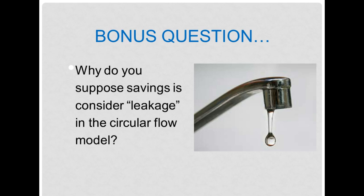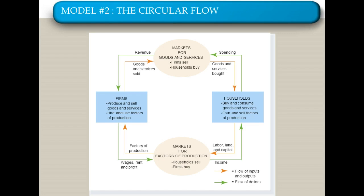One last question: why is savings considered leakage in the circular flow model? Leakage sounds like something that accidentally spills out. In the circular flow model, everything stays in a constant loop. The only way to get money out of this loop is essentially to not spend it — either to not spend it on goods and services or to not spend it on factors of production. Either way, if the money is saved, it leaks out of the circular flow model.